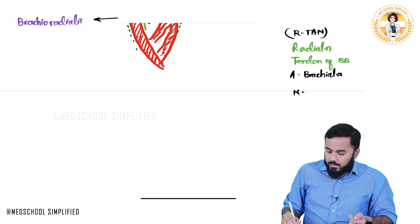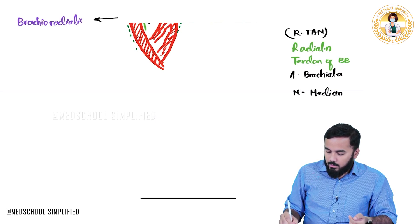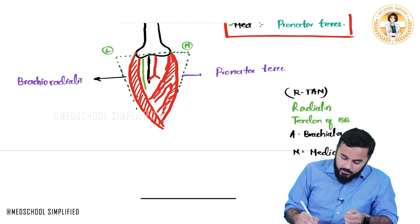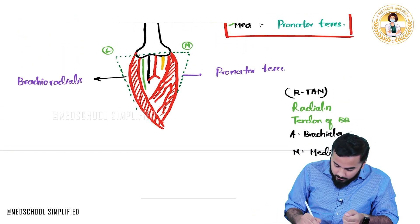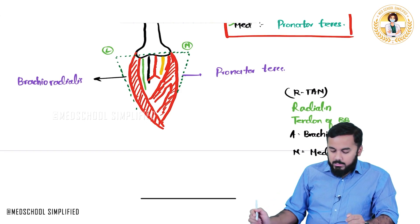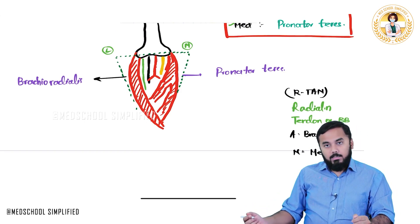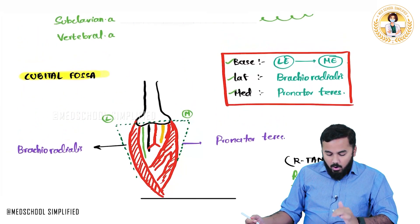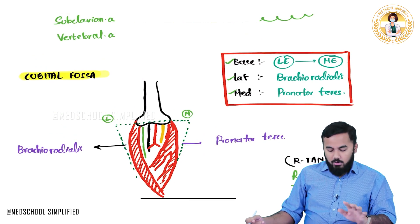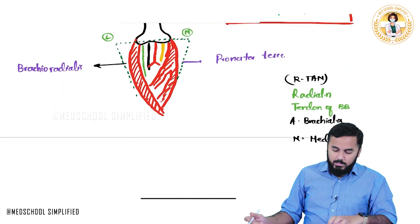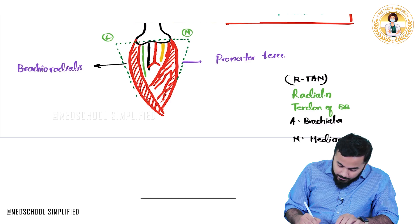N stands for nerve, and that nerve is called the median nerve. Here we have a nerve called the median nerve. So these are the contents from the lateral side to the medial side — radial nerve, tendon of biceps brachii, brachial artery, and median nerve. This is all about the cubital fossa.